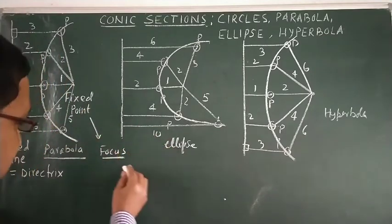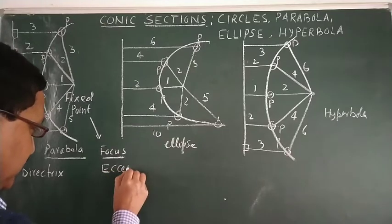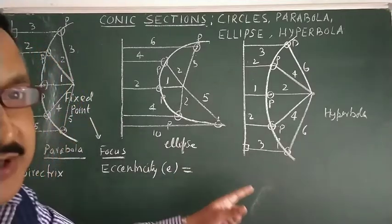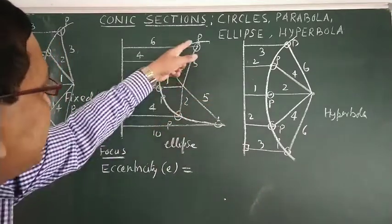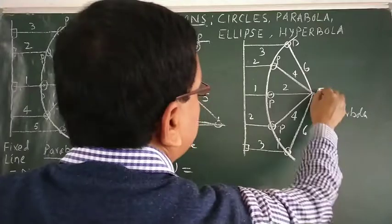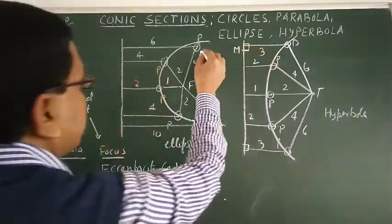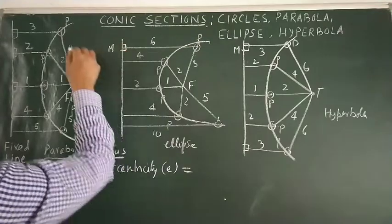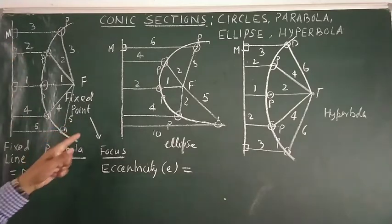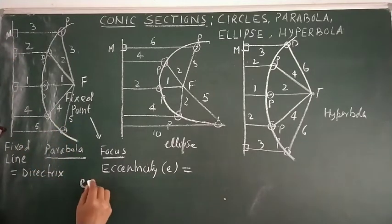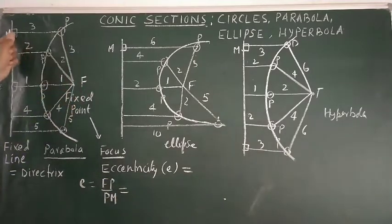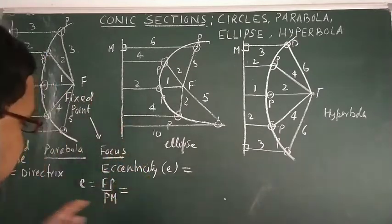So the directrix is the fixed line and the focus is the fixed point. One more thing — that is eccentricity. Eccentricity is denoted by e; it is the ratio of the distance of the moving point from the fixed point to the fixed line. That is FP by PM. For parabola, e equals FP by PM: three by three, two by two, one by one — everywhere we get one.